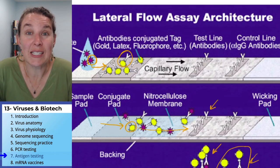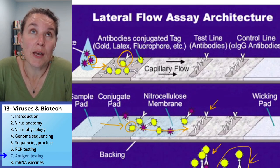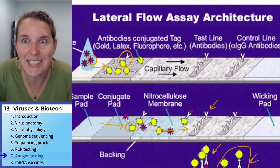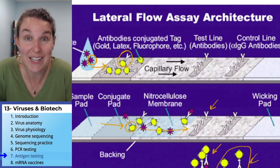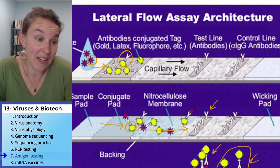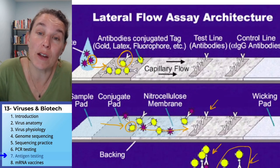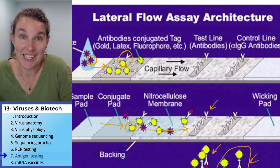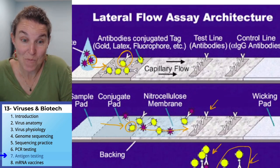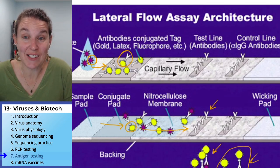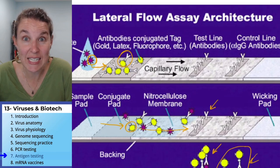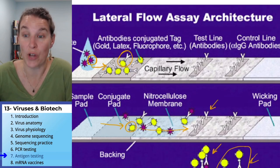This is the exact same technology used in pregnancy tests. In pregnancy tests, you're picking up a hormone called HCG that is excreted in urine if there is a small clump of growing cells in a uterus. That is how the antigen test works. The last thing I want to talk about is vaccines — what kind of vaccines did we come up with for SARS-CoV-2?